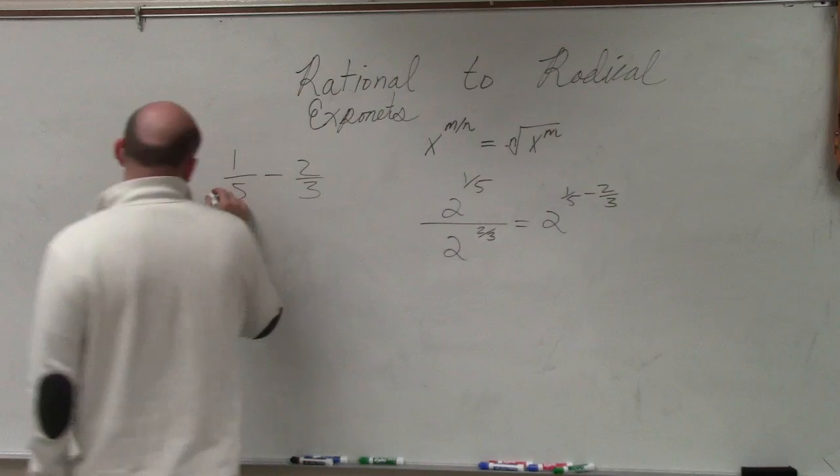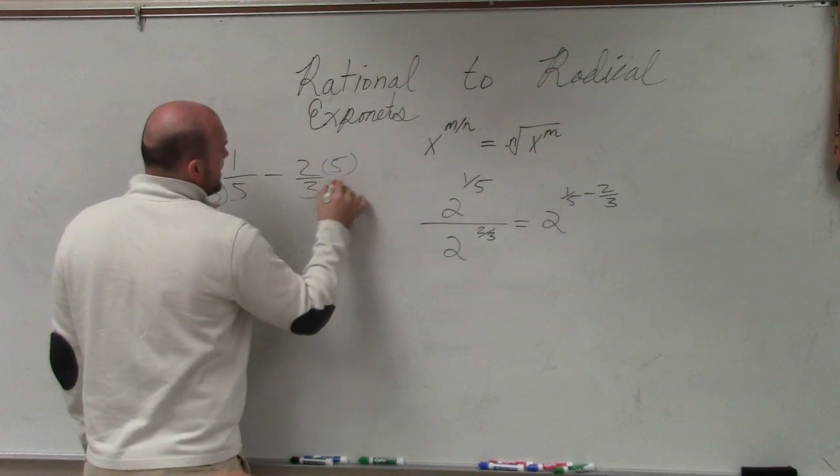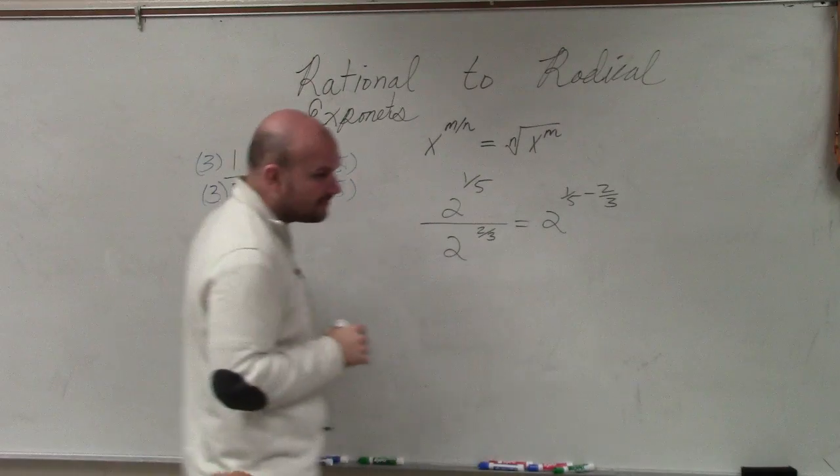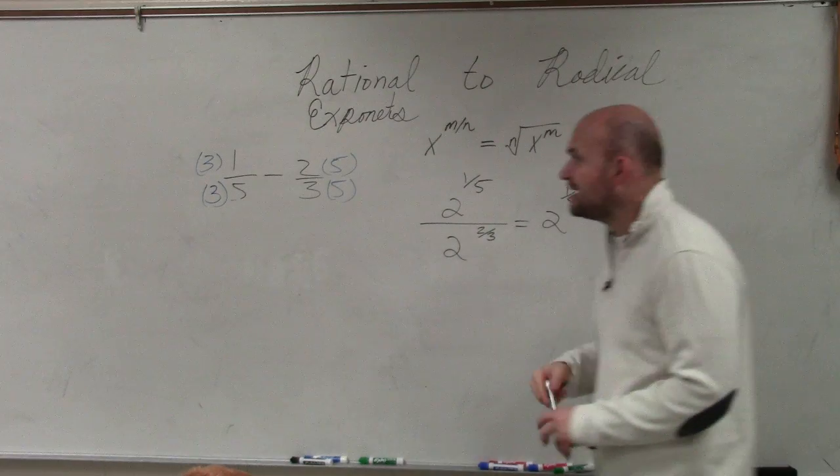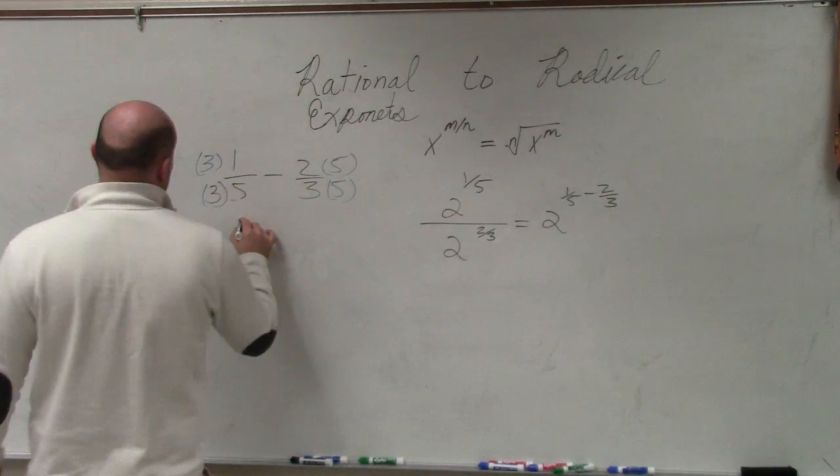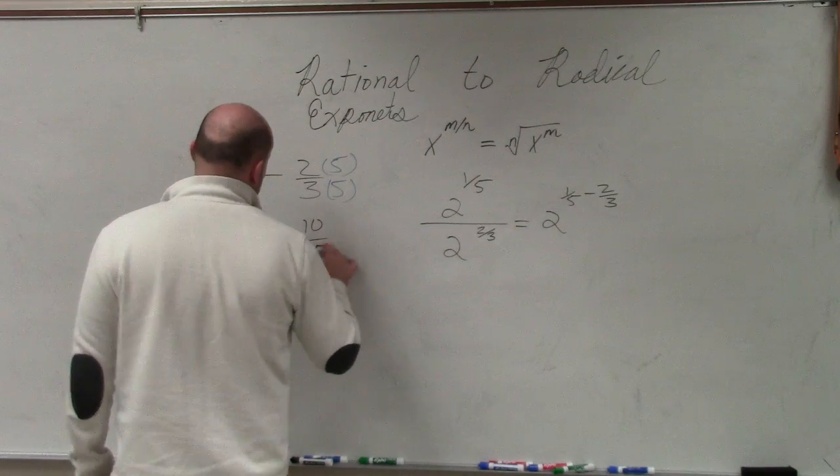The only way to add two rational expressions was to have the same base. So to do that, we have to find the LCD, which in this case is 15. So I multiply both fractions by multipliers to obtain a common denominator. Now, my common denominator is 15, so I have 3/15 minus 10/15. Does everybody understand what I have done?